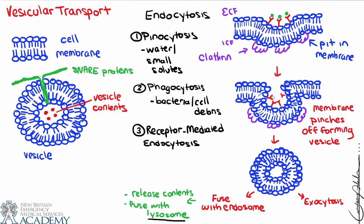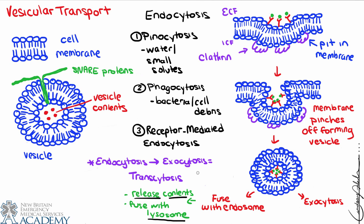We can see the membrane pinches off, the receptors are inside with their contents, and depending on the cargo, we may choose to release those contents into the cytoplasm or use a lysosome. One thing to mention: if you have endocytosis immediately followed by exocytosis — meaning something is taken in on one side of the membrane, travels in the vesicle, goes to the other side of the membrane, and is then exocytosed — we call that transcytosis. So we're transporting across the cell. The most common example would be pinocytosis.